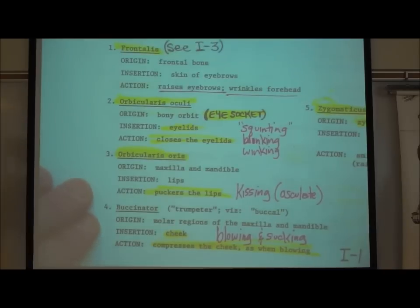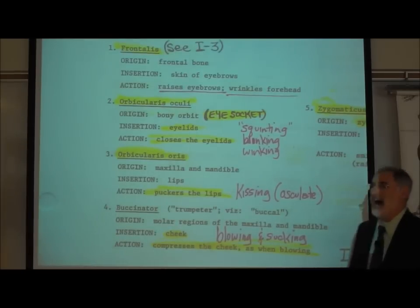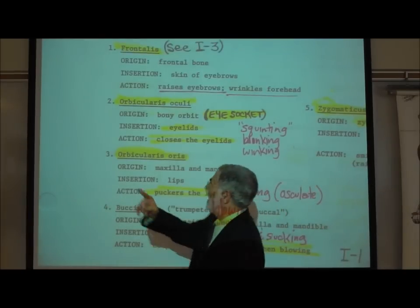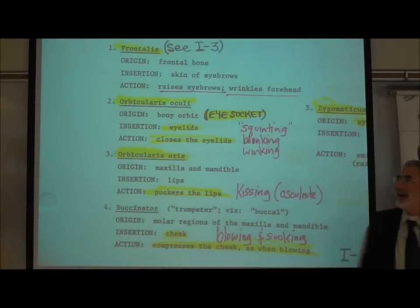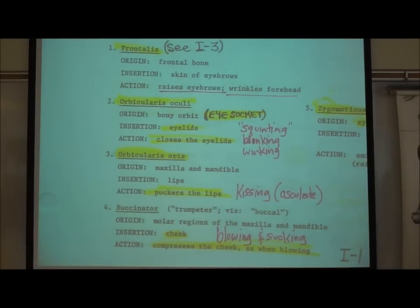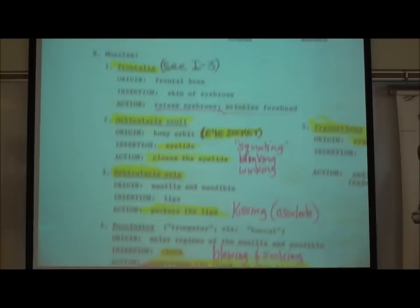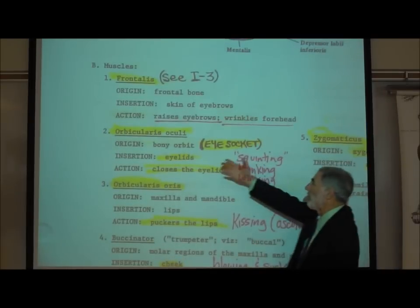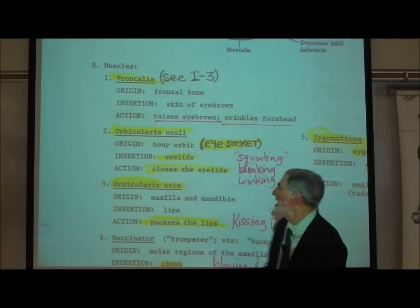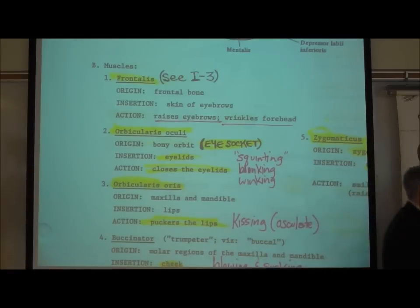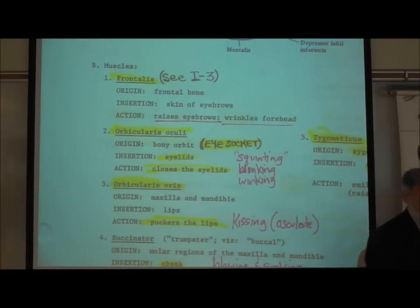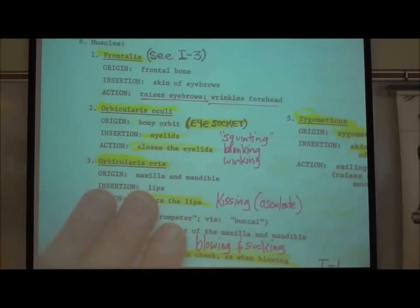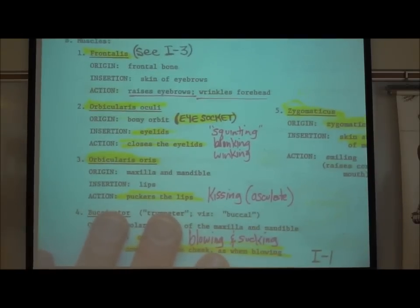Another facial muscle is the orbicularis oculi. Orbicularis means it's circular in shape, like an orbit. Oculi means eye. It originates in the orbit — the eye socket — and it inserts on the eyelids. When it contracts, it closes the eyelids, so it's used for squinting, blinking, and winking.